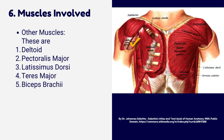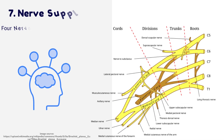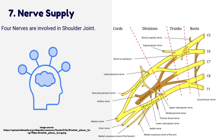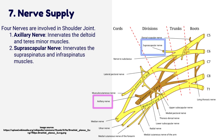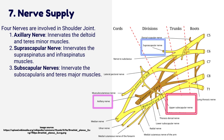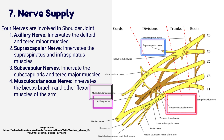Four nerves are involved in the shoulder joint. The axillary nerve innervates the deltoid and teres minor muscles. The suprascapular nerve innervates the supraspinatus and infraspinatus muscles. The subscapular nerves innervate the subscapularis and teres major muscles. The musculocutaneous nerve innervates the biceps brachii and other flexor muscles of the arm.